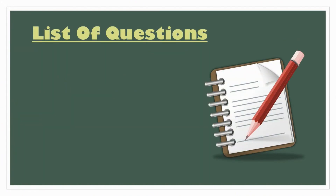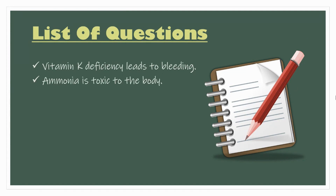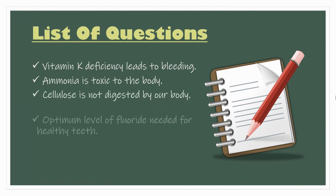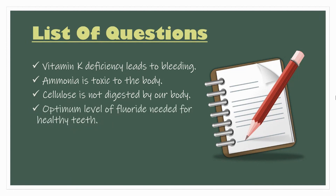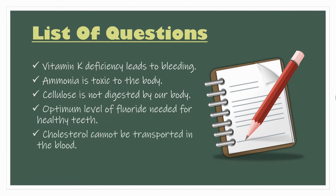The topics covered are: vitamin K deficiency leads to bleeding, ammonia is toxic to the body, cellulose is not digested by our body, optimum level of fluoride needed for healthy teeth, cholesterol cannot be transported in the blood, and the role of fiber in diet.